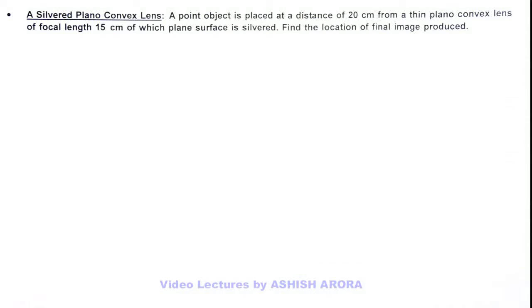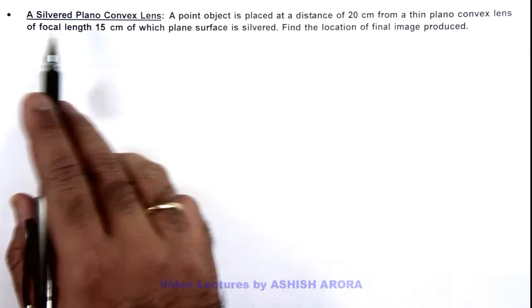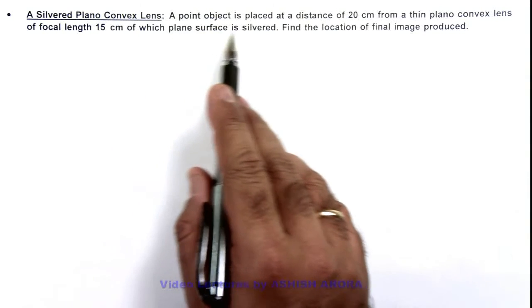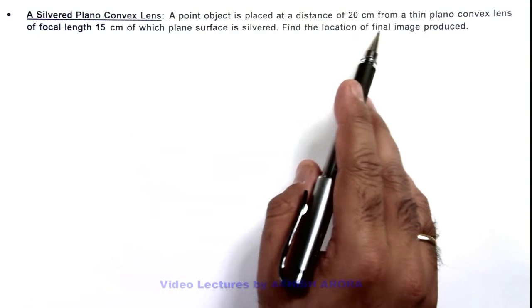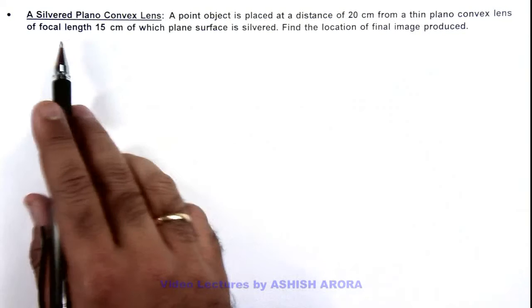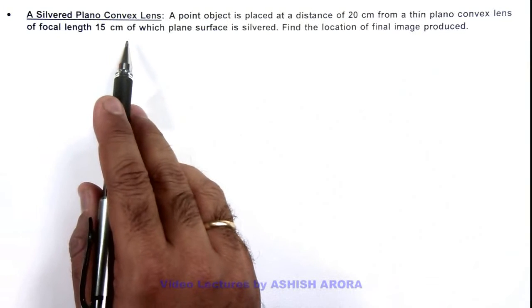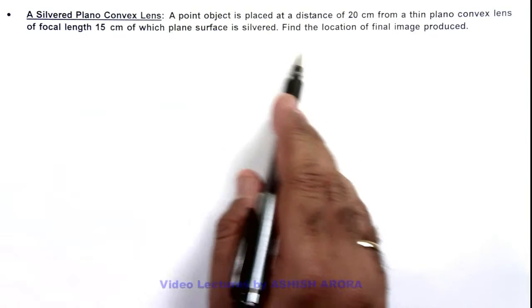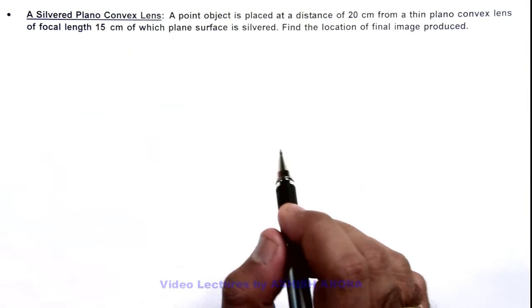In this illustration we'll study about a silvered plano-convex lens. Here we are given that a point object is placed at a distance of 20 centimeter from a thin plano-convex lens of focal length 15 centimeter, of which the plane surface is silvered. We are required to find the location of final image produced.